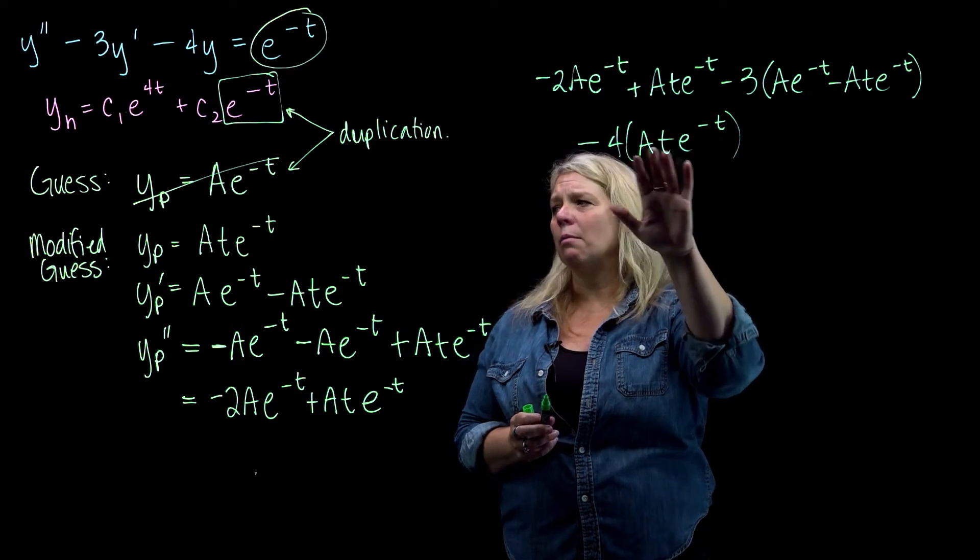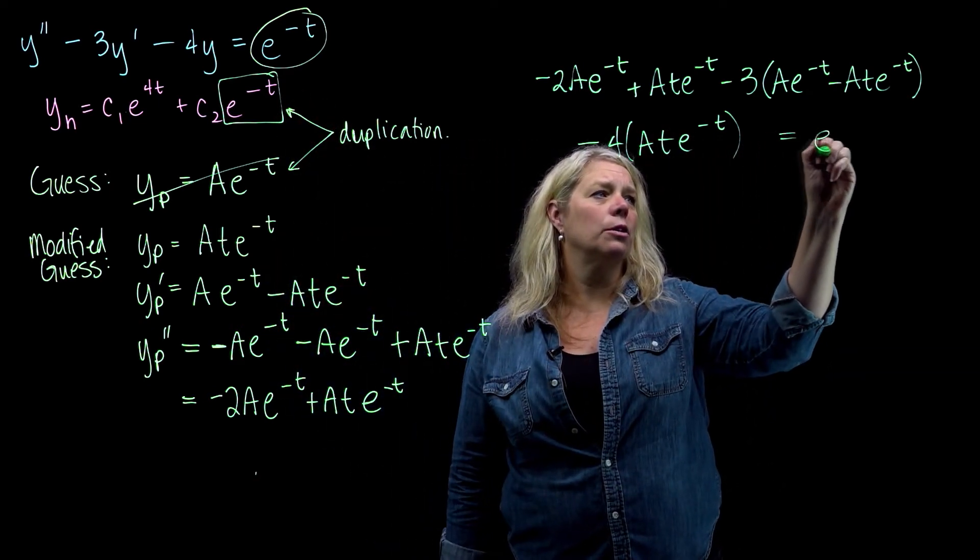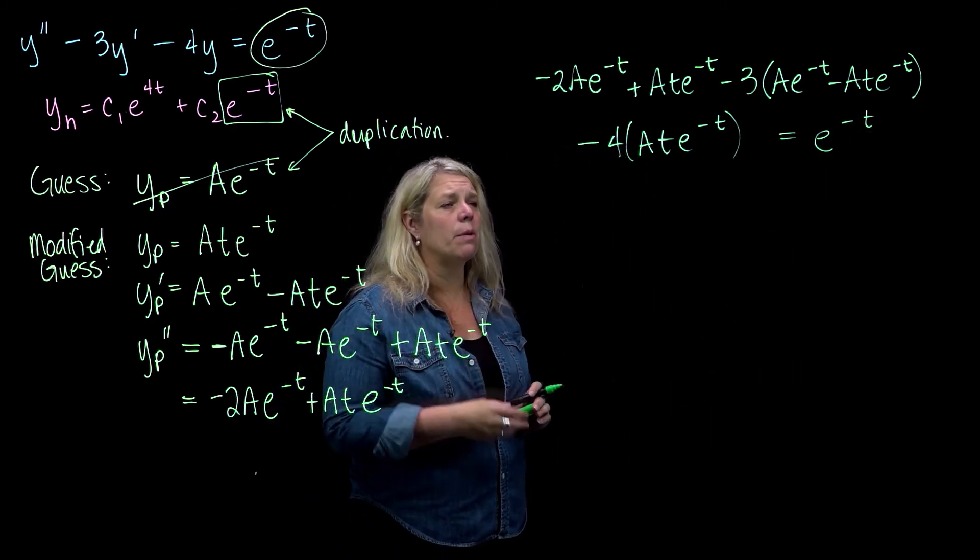minus 3y prime, minus 4y, and then that's all going to be equal to e to the negative t. And then I want to simplify the left side a little bit.